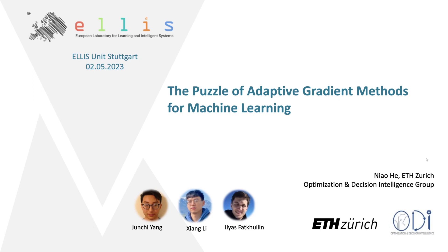Hello everybody and welcome to our Distinguished Lecture Talk today. We have Dio here from ETH in Zurich, where she's now an assistant professor. She's been before in the US, in Georgia as well as in Illinois. She is working on optimization and decision intelligence, is an Alice Scholar, and has gained a lot of awards from AI Stars and several others. She's regularly serving as an area chair in all the conferences we know. Let's start with the talk.